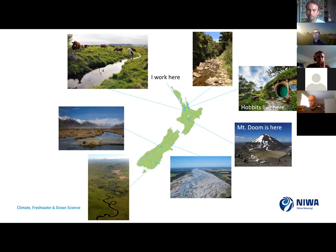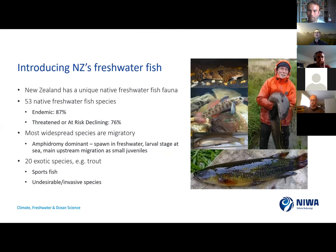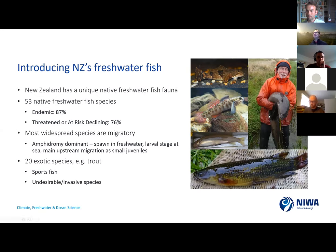An important thing to emphasize is that we actually have a really unique fish fauna here in New Zealand, but what we'll realize is the problems around flood pumps and tide gates aren't unique. We have around 53 native species here, but nearly 90% of them are endemic and only exist in New Zealand. However, we're not doing a particularly good job of looking after them — three-quarters of them are actually classified as threatened or at risk. Most of our widespread species are diadromous and migrate between the sea and fresh water. We have some impressive eels here — our longfin eels can grow up to nearly two meters long and 15 to 20 kilos.